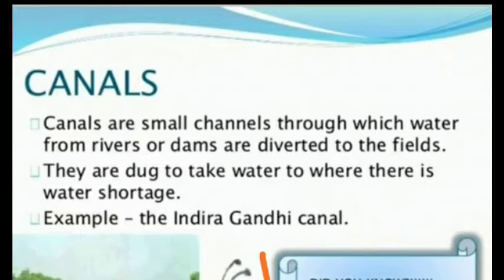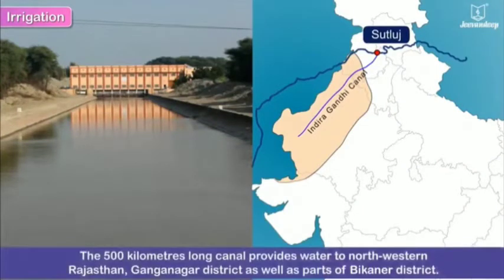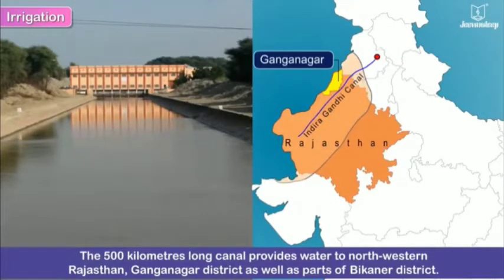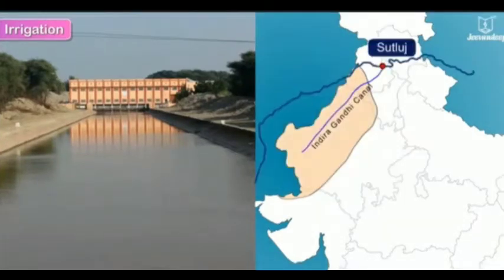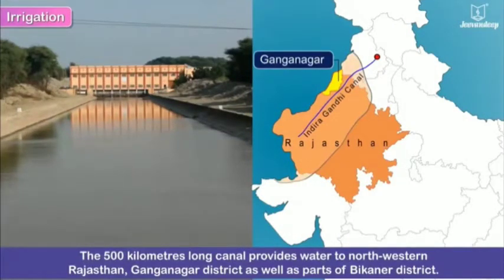Here, from the Sutlej River, they store the water and from there bring it through the Indira Gandhi Canal to Rajasthan, because Rajasthan does not have sufficient water. Rajasthan gets water from the Sutlej River through the Indira Gandhi Canal. This Indira Gandhi Canal is the longest canal in the world. At present it waters Ganganagar and Bikaner districts.